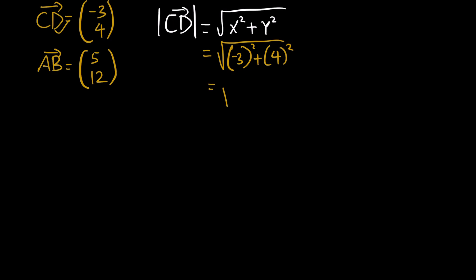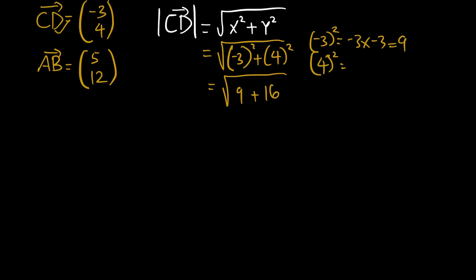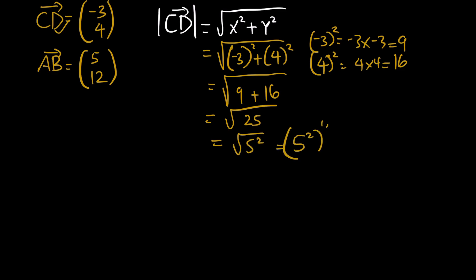Negative 3 squared is 9, and 4 squared is 16, giving us square root of 25. Square root of 25 is square root of 5 squared, which is 5 squared to the power of one-half. The two cancels out and we get 5 to the power of 1, which is 5.